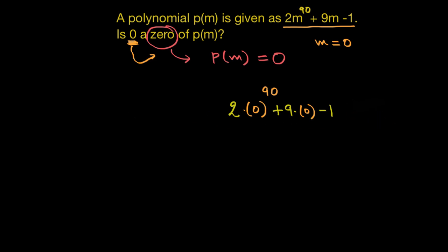So this would give us 0 to the power 90 is 0, 9 times 0 is 0, and minus 1.